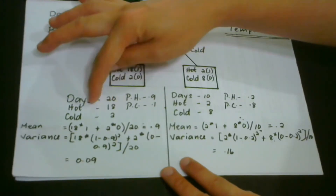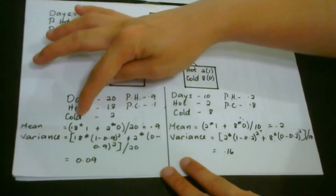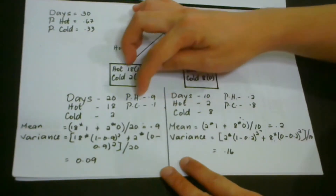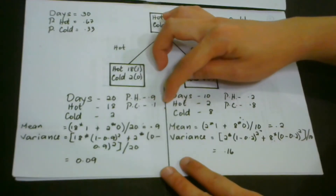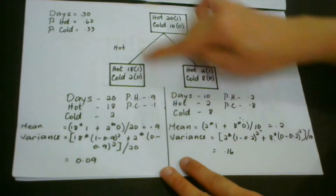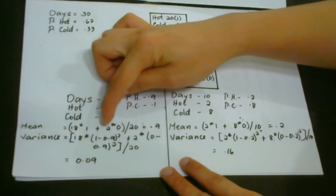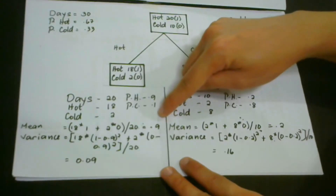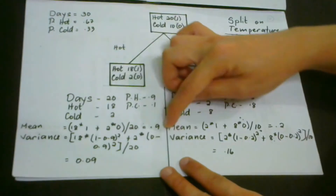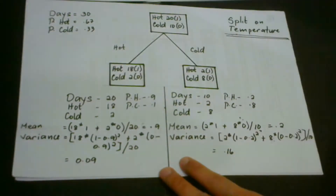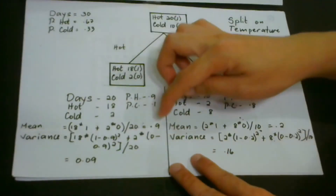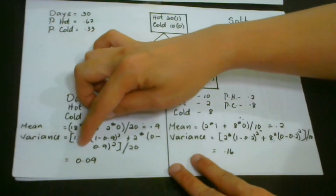For the first child node (hot, 20 days total): 18 days are hot and 2 are cold. The probability of hot is 0.9 and of cold is 0.1. Computing the mean for this node gives 0.9. Using the variance formula, the variance of this child node is 0.09. Please check this calculation on your own and write any questions in the comment section.